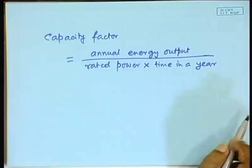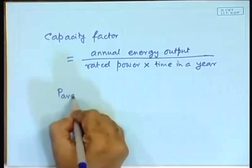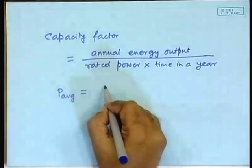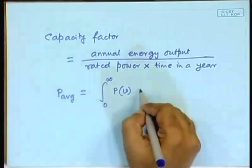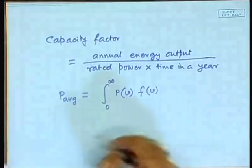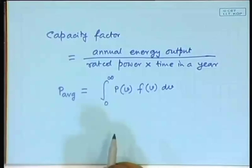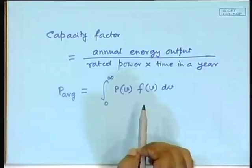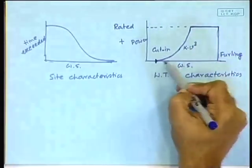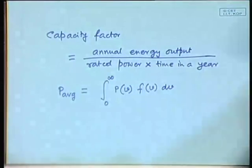The numerator is the average power generated — that is the integral of power as a function of wind speed times the probability distribution of wind speed. This integral normally has to be obtained graphically. But under the assumption that the characteristic is exactly of this type — no generation below cut-in, exactly cubic after that, and exactly flat at rated power — it can be somewhat analytically obtained.